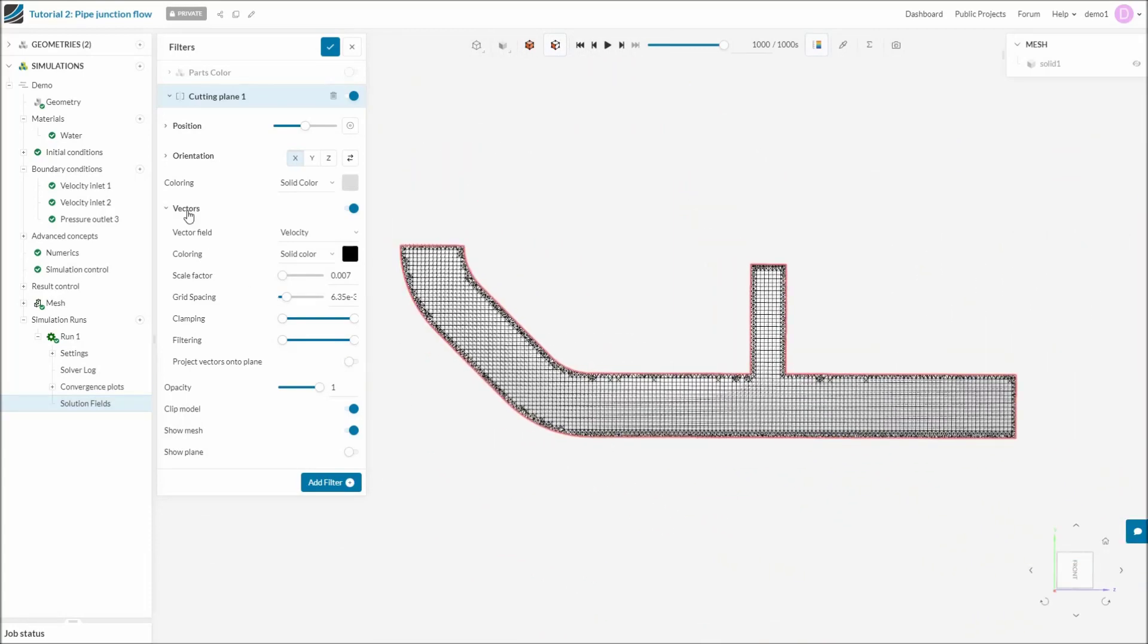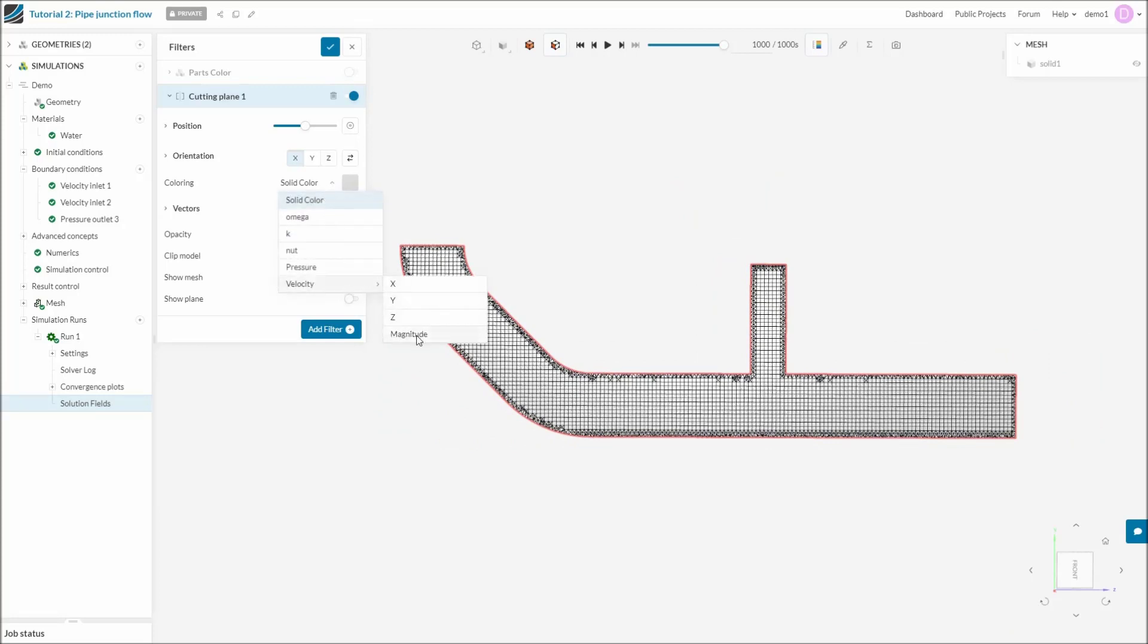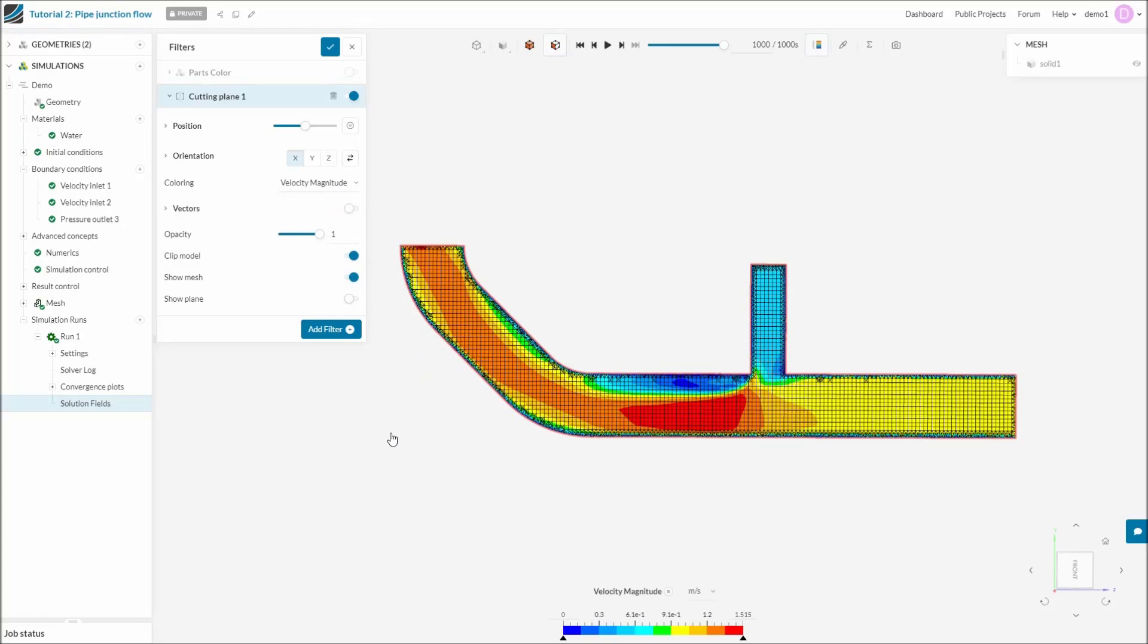Now, the nice thing about being on a computer is that instead of looking at arrows to understand how fast the water is moving, we can use colour. In this case, the redder the colour, the faster the water. The bluer the colour, the slower the water.